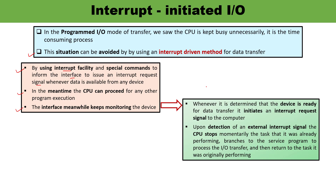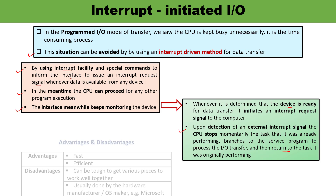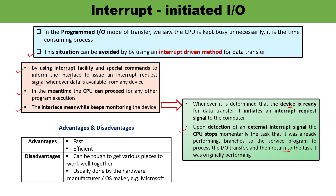The interrupt request signal is issued only when the device is ready for data transfer. When the CPU observes the signal, it stops the task it was currently executing, performs the requested IO operation, and after completion returns to the main task it was performing earlier. This is how interrupt initiated IO works — there is no need to continuously monitor peripherals; only when peripherals are ready does the interface initiate the interrupt request signal.